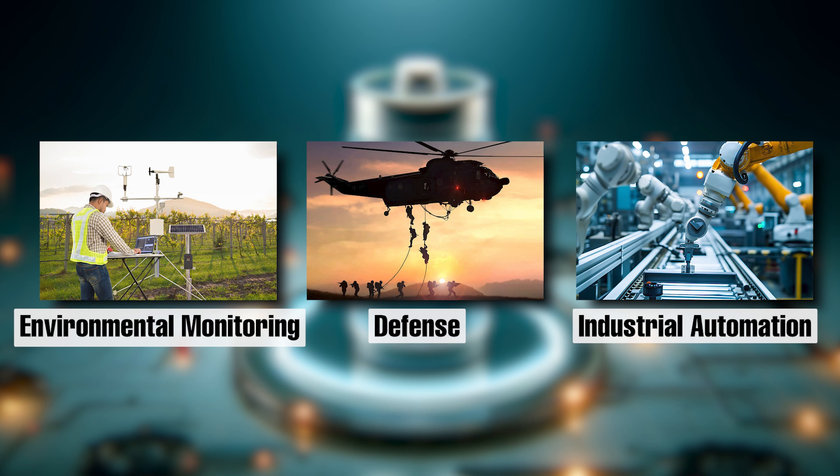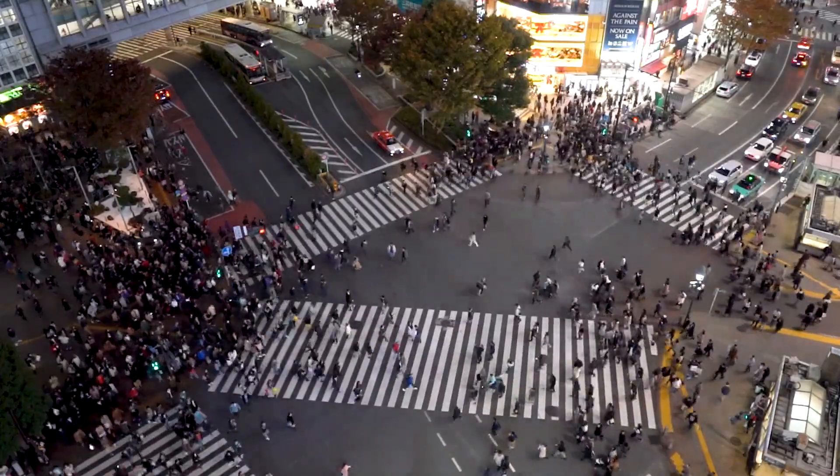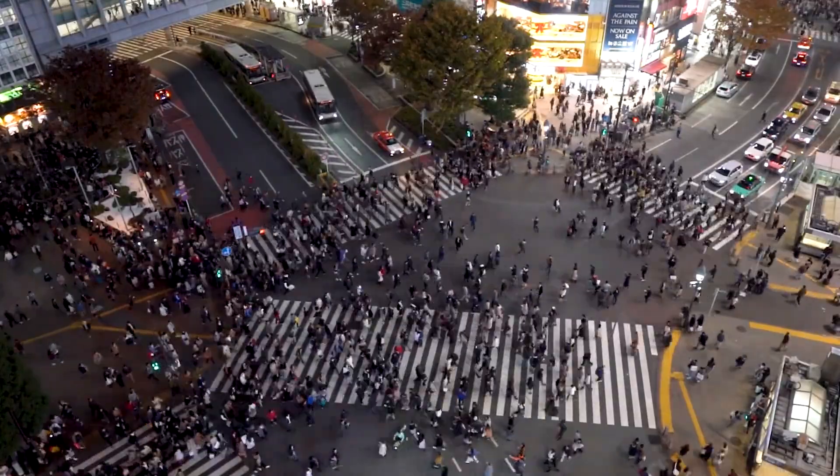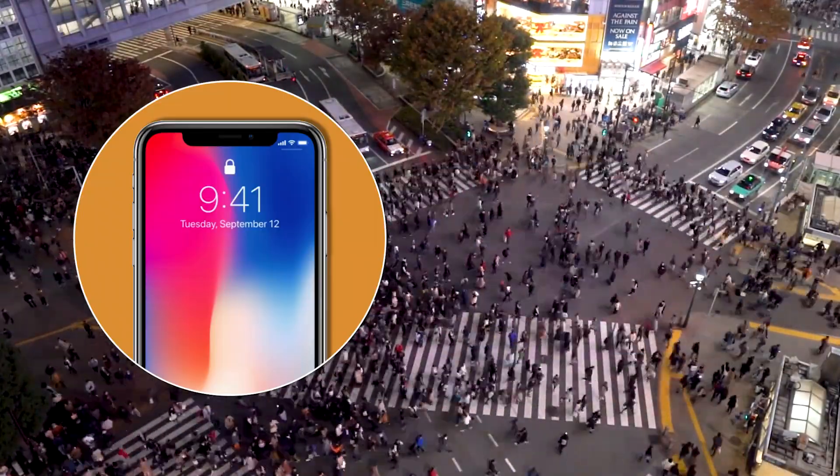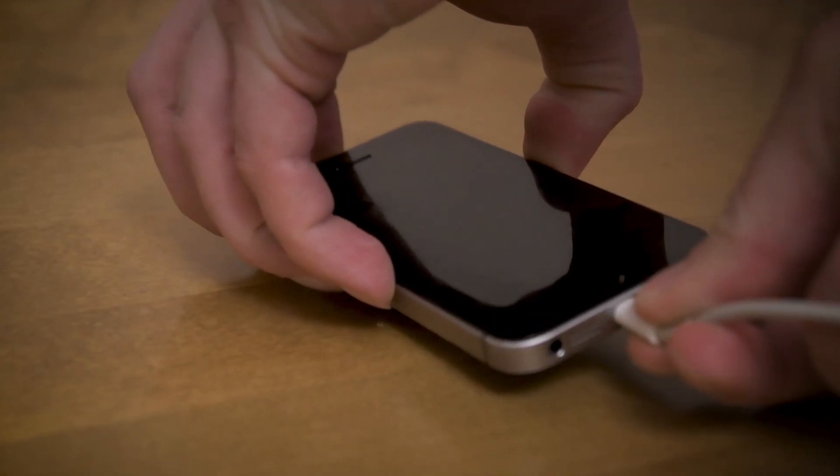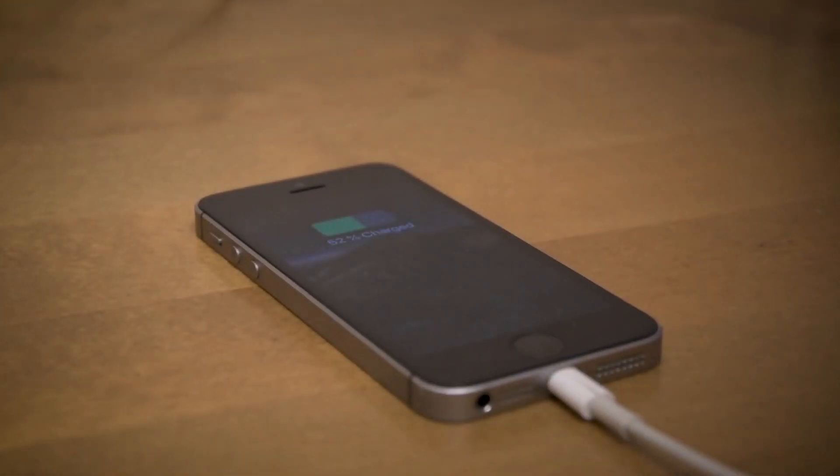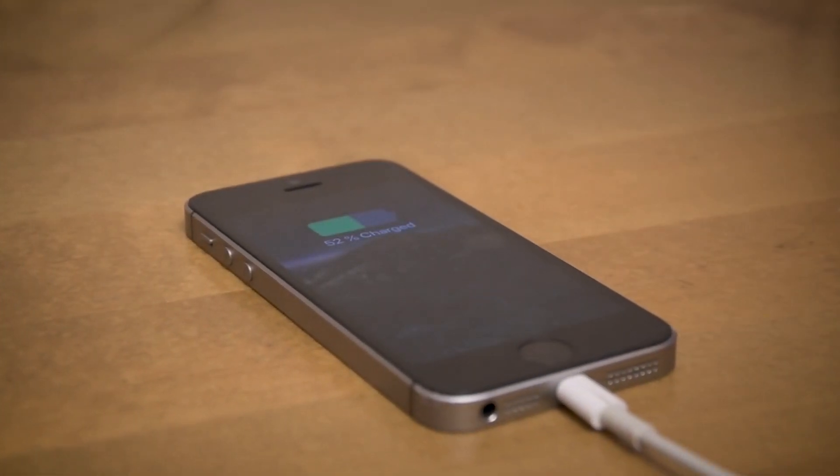And let's not forget the futuristic possibilities. BetaVolt envisions a world where nuclear batteries power everything from smartphones to drones, eliminating the need for frequent charging. While this might still be a few years away, the progress so far is promising.